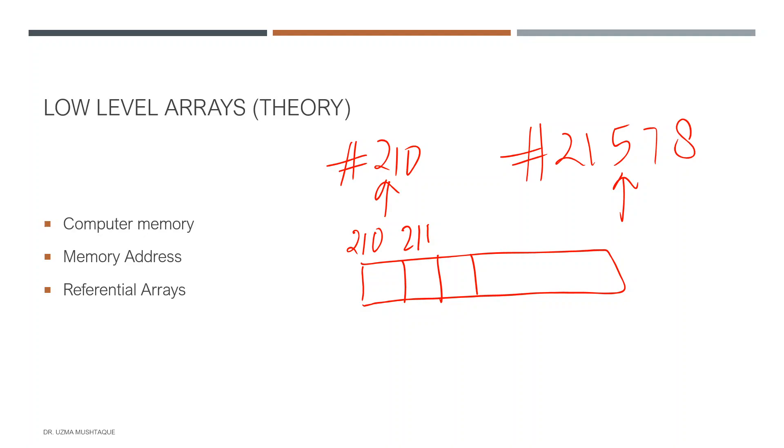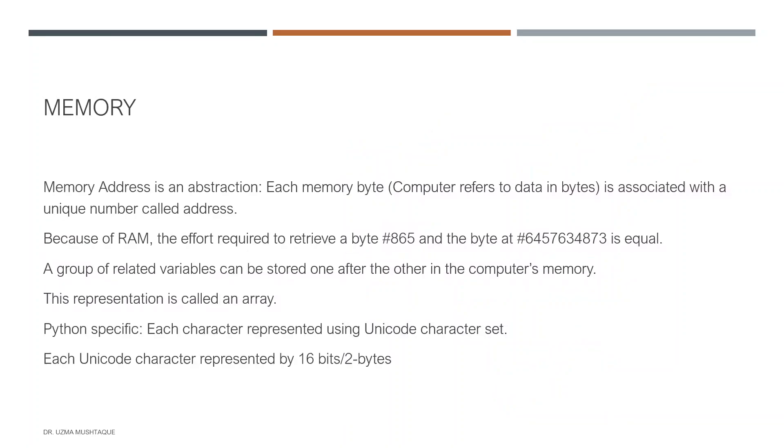Despite the sequential nature of the numbering system, computer hardware is designed so that any byte can be efficiently accessed. The effort that goes into accessing one byte versus another is equal, and that's possible because of random access memory. Memory address is an abstraction—each memory byte is associated with a unique number, and that number is your address.